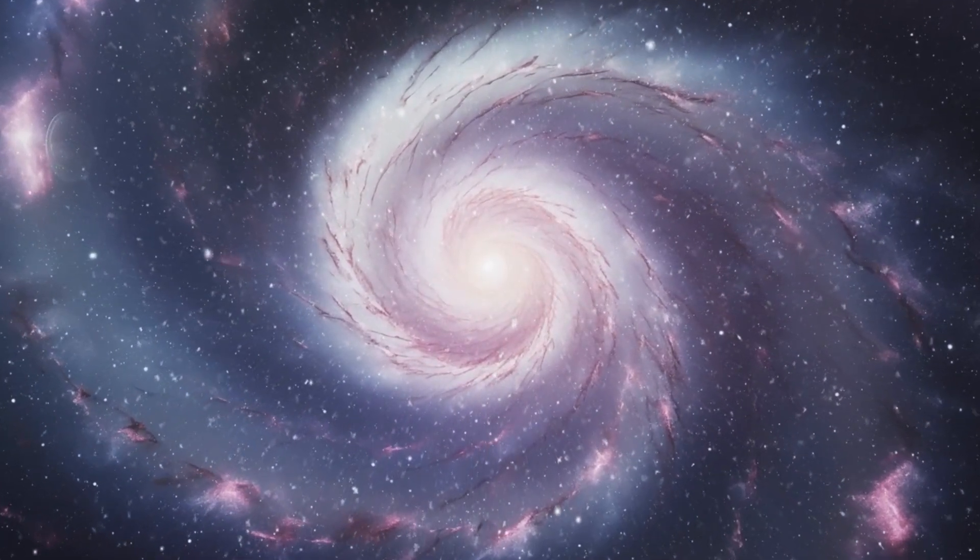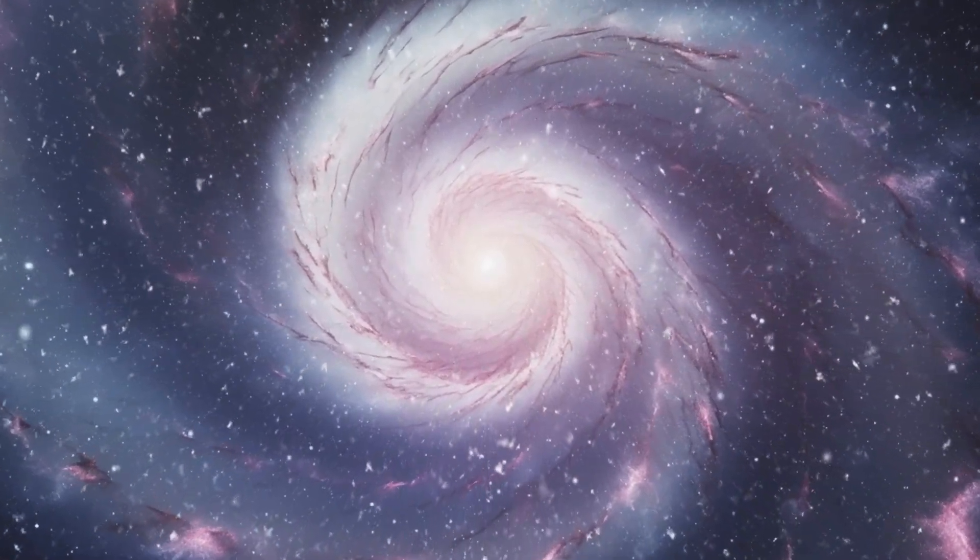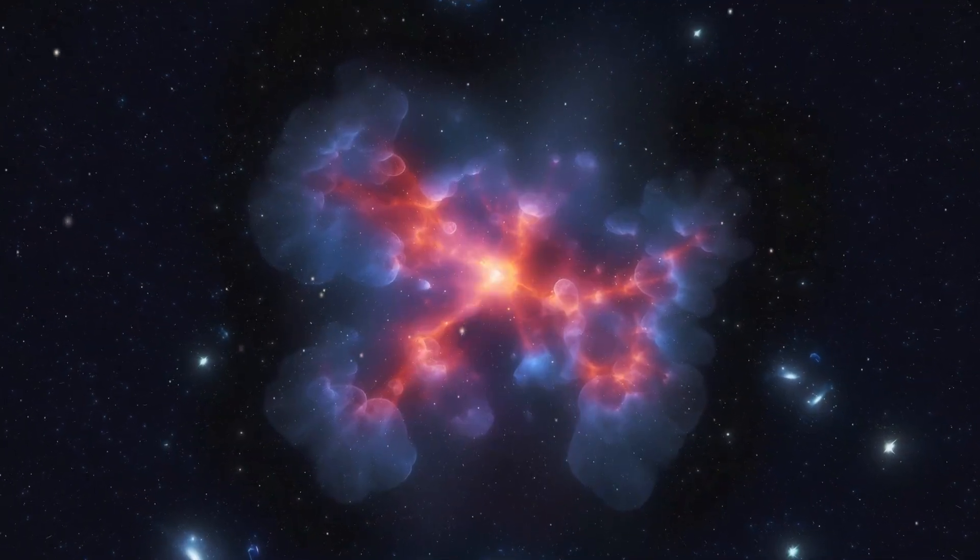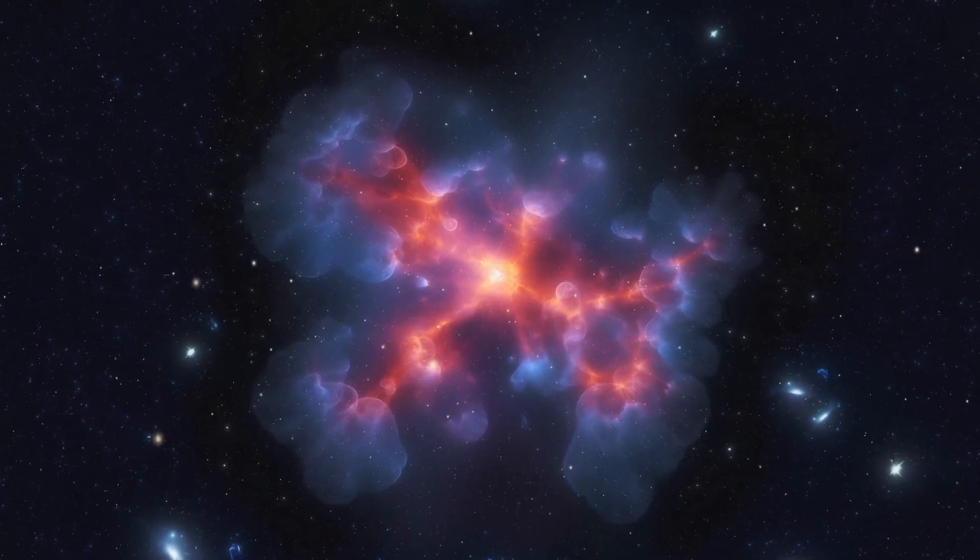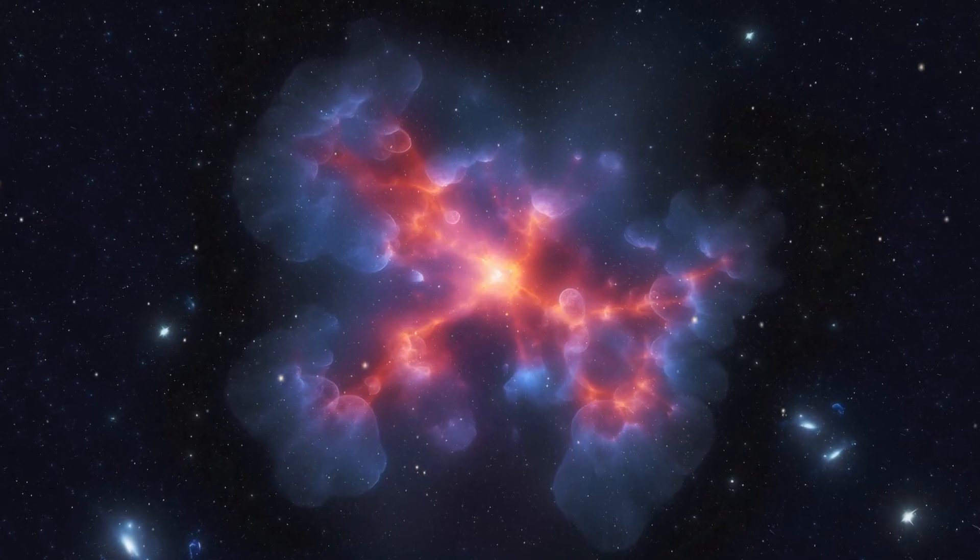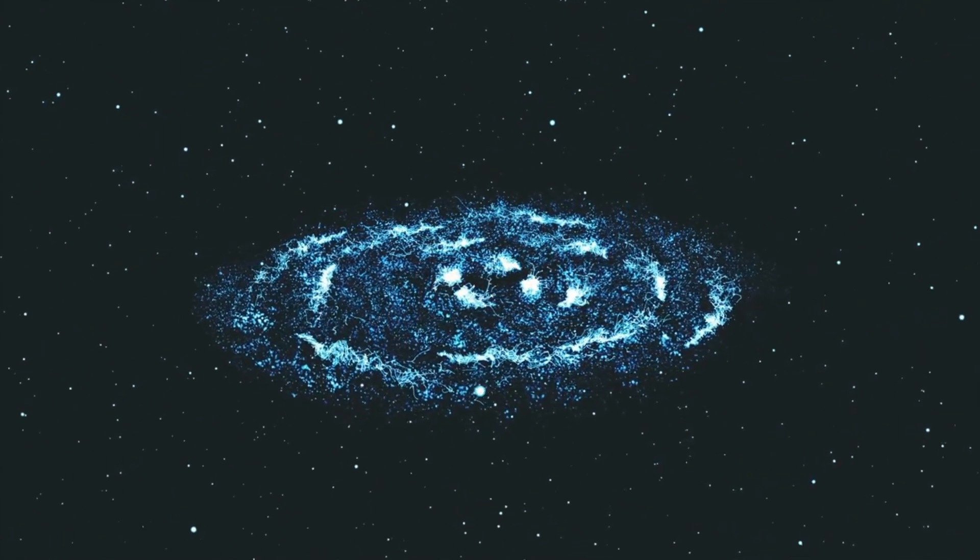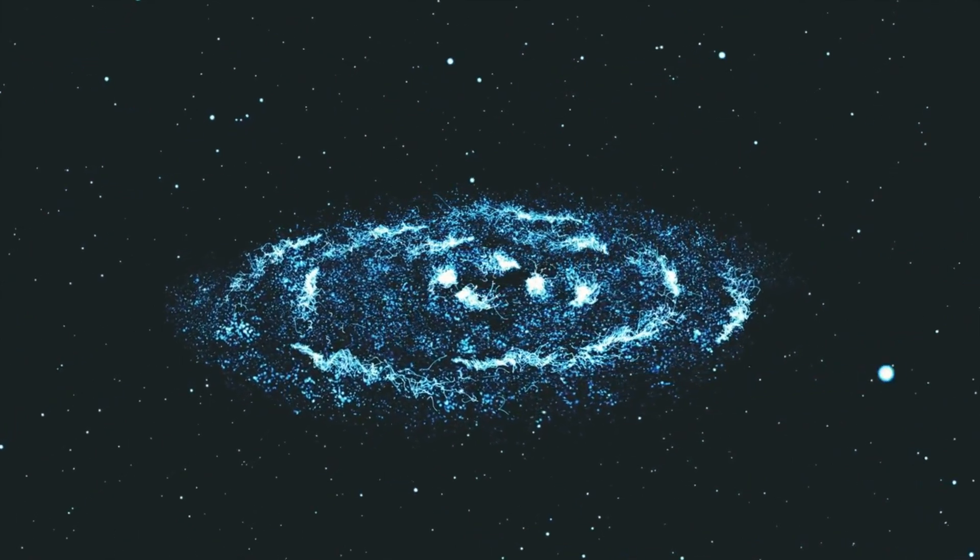In the first seconds after the Big Bang, the universe was a hot and dense soup of primordial particles. Over millions of years, the first stars began to form, laying the groundwork for galaxies. This process of cosmic evolution from chaotic beginnings to the structured universe we observe today is believed to have taken about one billion years.